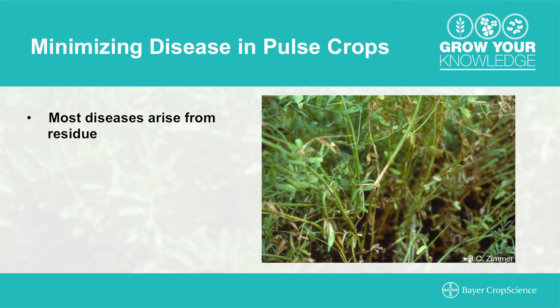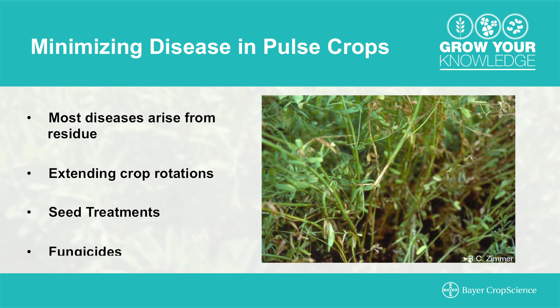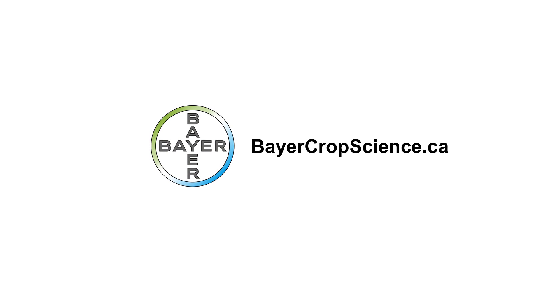Crop residue is the primary source of infection for diseases in pulse crops. But with the use of good agronomic practices, you can minimize the spread of disease. Extended crop rotations, seed treatments and fungicides are now the most reliable options for reducing and controlling diseases in these crops. Proactive disease management is very important in all crops, but it is extremely important in pulses. Unchecked, diseases can spread very rapidly, which can lead to significant economic loss in a very short period of time. A proactive fungicide application is your best defense. For more information on pulse diseases and fungicide application, visit BayerCropScience.ca or talk to a Bayer CropScience representative or your local retailer.